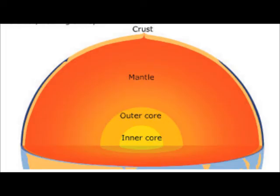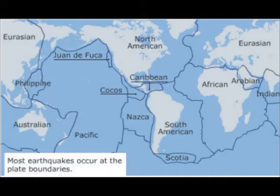The earth is made up of an inner core and an outer core, followed by the mantle and the crust. The crust and upper mantle form the lithosphere, which is broken up into tectonic plates. The core is made up of hot magma, which pushes up from the core, creating underlying convection currents that cause the plates to move in different directions.